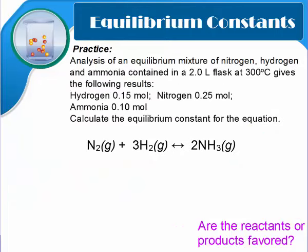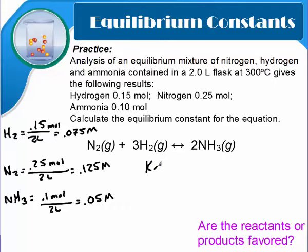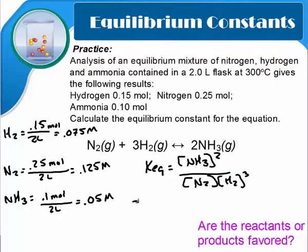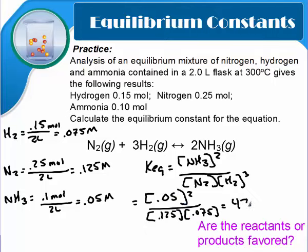Pause the video and try this one on your own. Restart when you have your answer. So you should have calculated your molarity and shown work, written in your Keq expression, and then plugged in your values into your Keq expression. Solving that out, you get 47.4, but we want two sig figs, so just 47. In this case, our Keq is much larger than 1, so the products are favored.